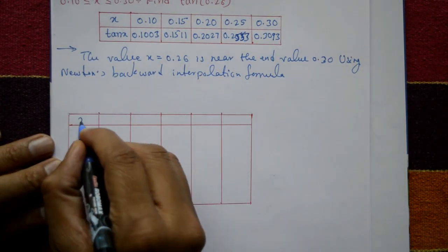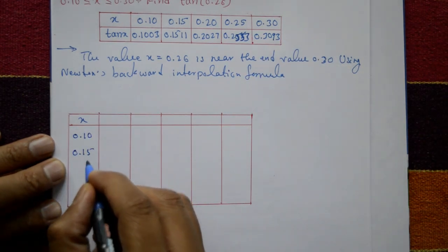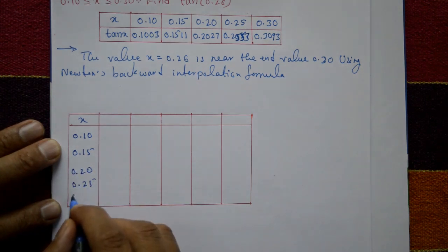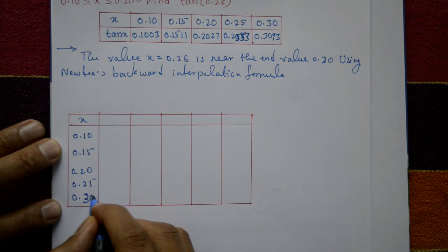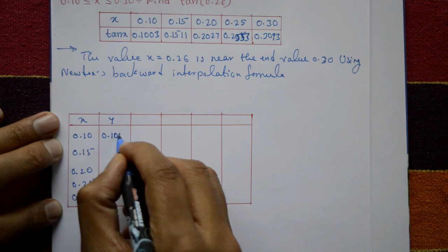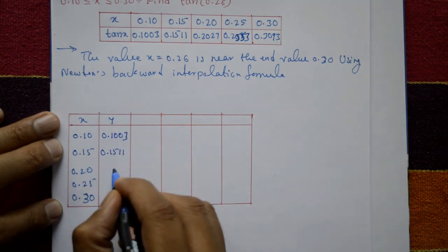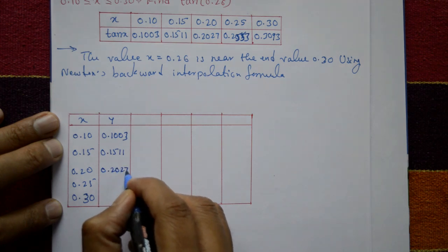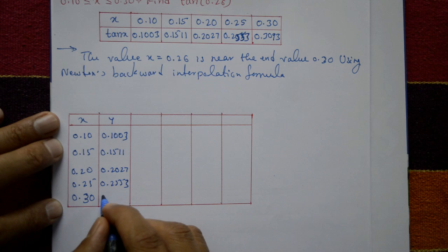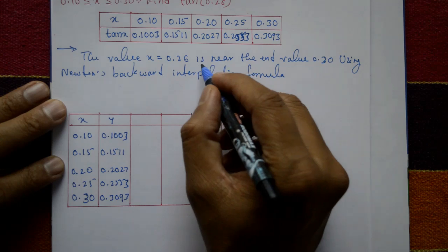The x values are: 0.10, 0.15, 0.20, 0.25, and 0.30. The corresponding y (tan x) values are: 0.1003, 0.1511, 0.2027, 0.2553, and 0.3093. Now we construct the backward difference table.